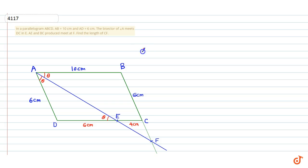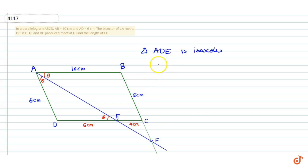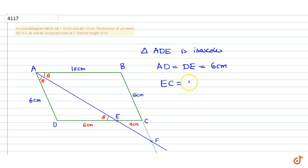Therefore triangle ADE is isosceles. In triangle ADE, AD is equal to DE, which is equal to 6 centimeters. Therefore EC equals DC minus DE, which is equal to 10 minus 6, which is equal to 4 centimeters.